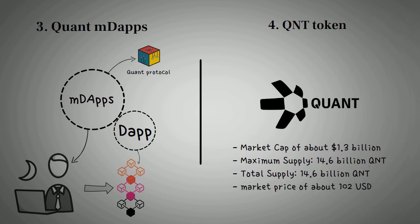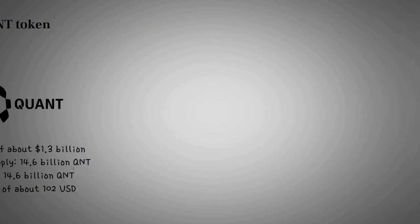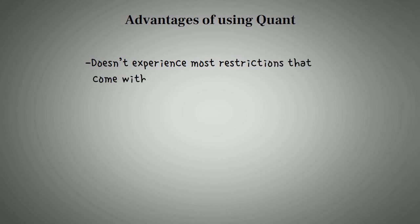Furthermore, let's look into the advantages of using Quant. One: Since it's built from scratch, Quant doesn't experience most restrictions that come with distributed ledger technology. It can be installed seamlessly without prior knowledge of cryptography or programming. Two: Quant users can connect to any type of digital ledger system, irrespective of their position. Developers, individuals, and even public workers can use the network without prior programming knowledge.